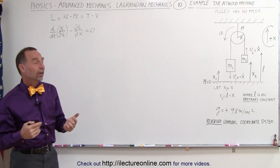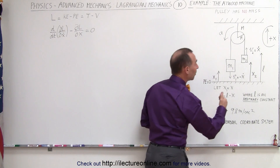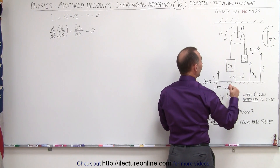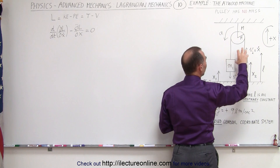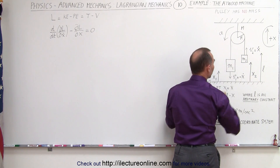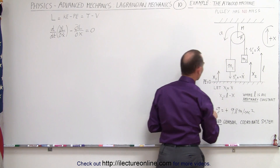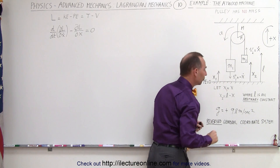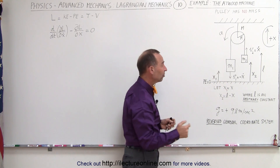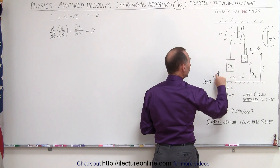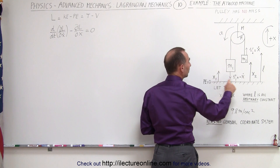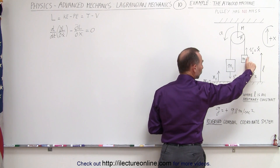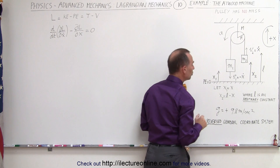Now let's reverse things. We're going to call the positive x direction upward, we're going to find the positions of m1 and m2 relative to the floor, and we're going to call potential energy equal to zero here at the floor as well. The distance from the floor to m1 we'll call x1, and the distance from the floor to m2 we'll call x2.